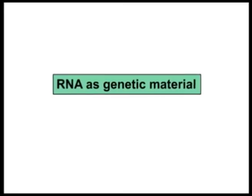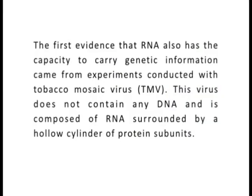RNA as genetic material. With the help of transformation experiments and bacteriophage infection discussed earlier, it was shown that DNA is the genetic material. However, some viruses do not have DNA as the genetic material but use RNA as their information carrier. RNA is a nucleic acid that is single-stranded and less stable than DNA. The first evidence that RNA also has the capacity to carry genetic information came from experiments conducted with Tobacco Mosaic Virus. This virus does not contain any DNA and is composed of RNA surrounded by a hollow cylinder of protein subunits. The experiments conducted by Fraenkel-Conrat in California showed that RNA is the genetic material in this virus.